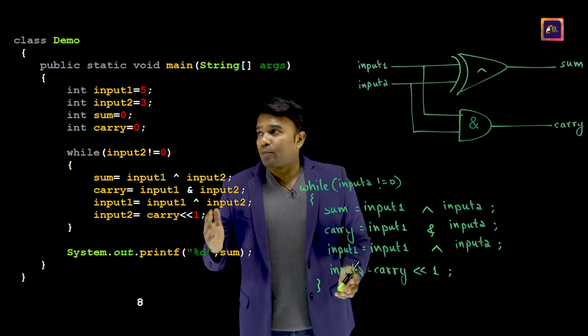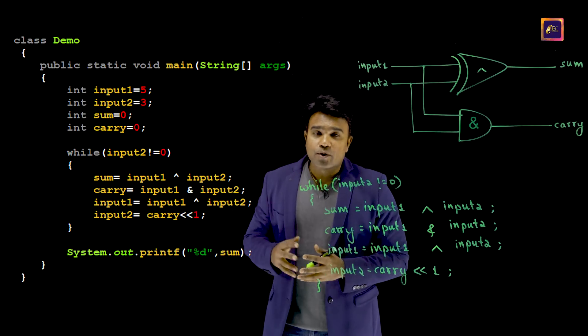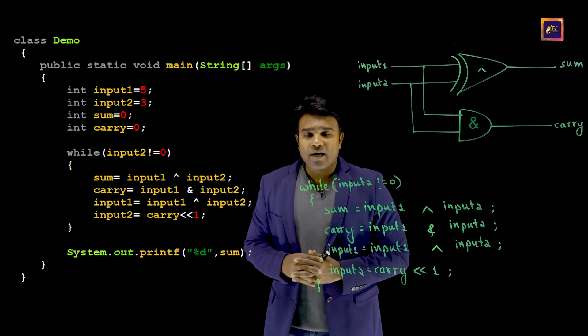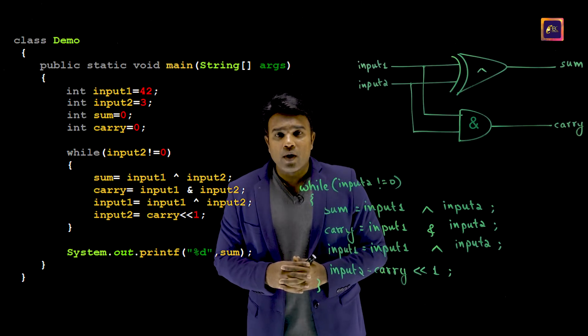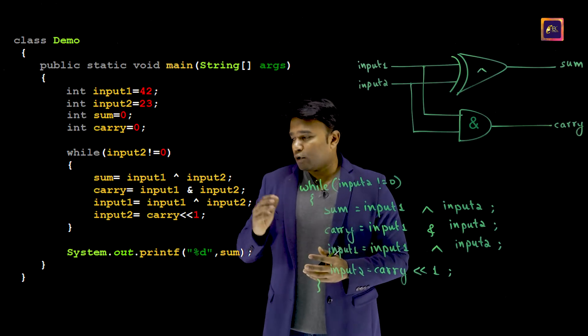Well, this program works, this logic works, not just for the inputs 5 and 3. I can have any input. If in case I change my input 1 to 42 and input 2 to 23, and then if I will perform the execution, this is the output.